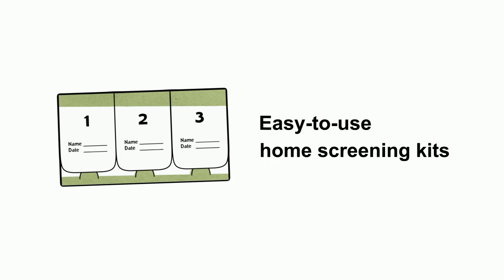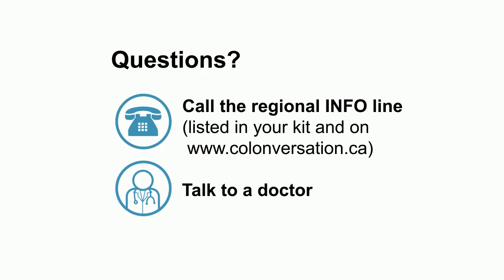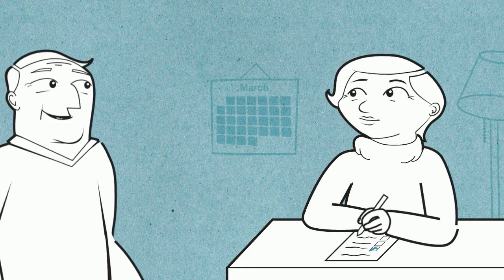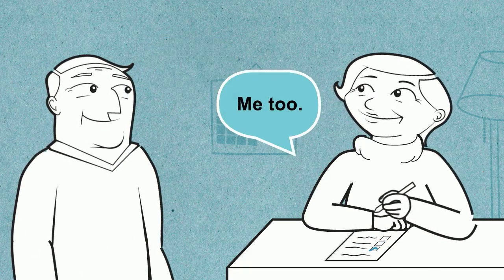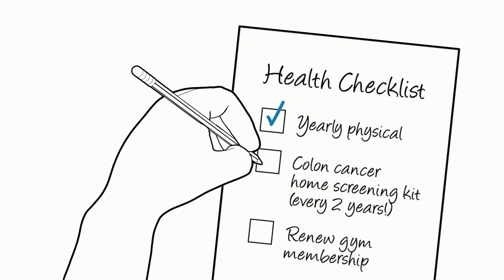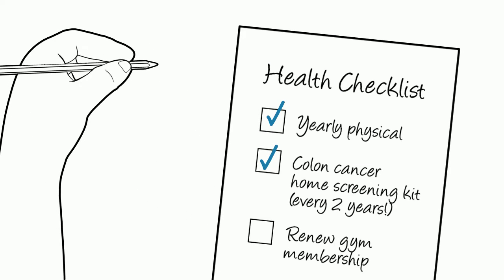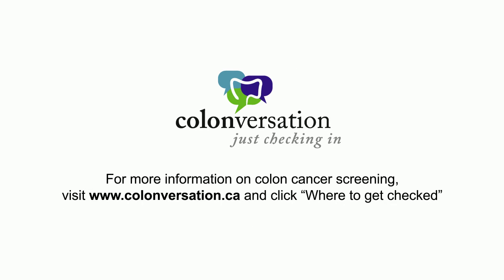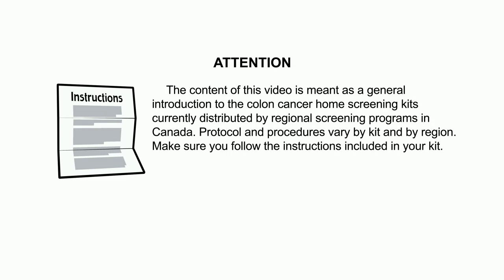Home screening kits are easy to use, but if you do have questions along the way, call your regional info line or talk to a doctor. Early detection matters and can save lives. If you are 50 years of age or older, add colon cancer screening to your health checklist and complete a home screening kit at least once every two years. Learn more about colon cancer at colonversation.ca.